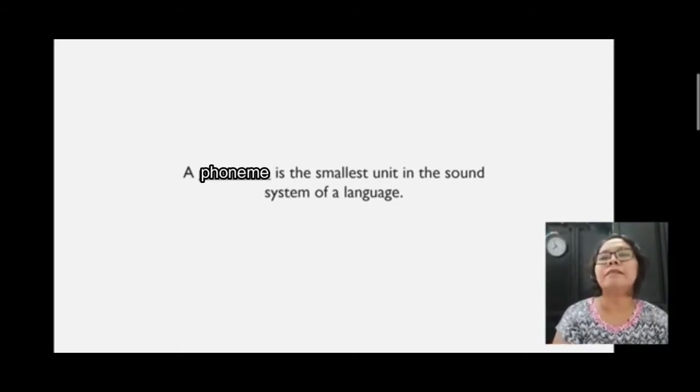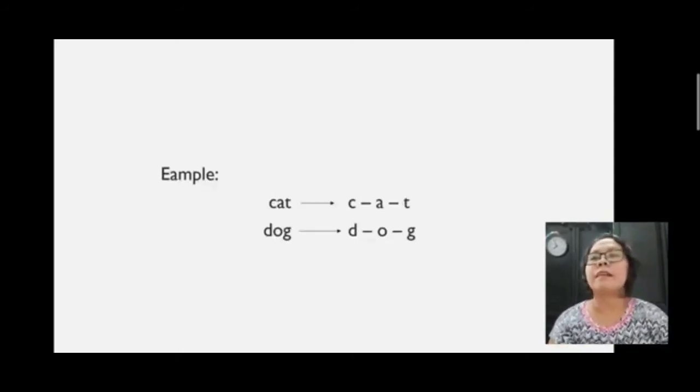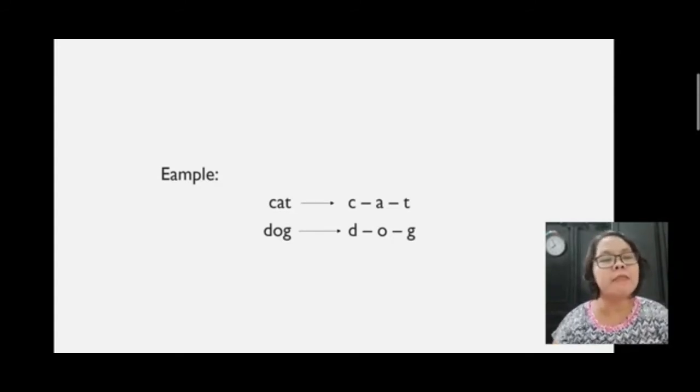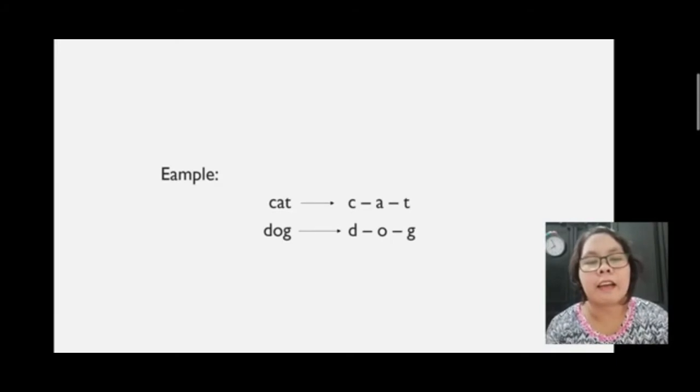So, let's have an example. We segment the word cat by putting dash between units of sounds. So, there are how many phonemes in the word cat? Okay, there are three phonemes. These are c, a, t.